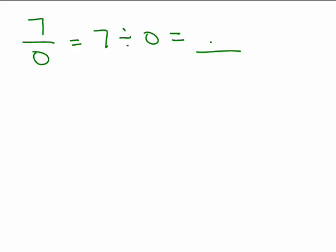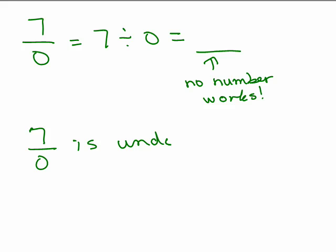So 0 times whatever is over here is going to be 0. It will never equal 7. So in this case, no number works. Previous example, any number works. So 7 divided by 0 is undefined as well.